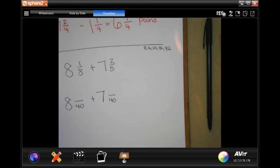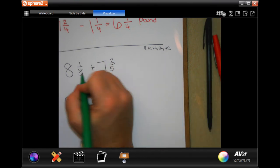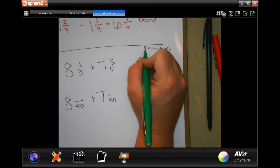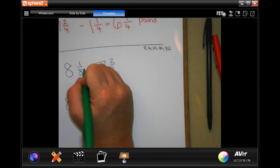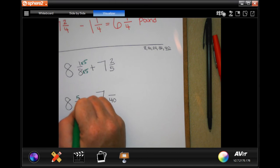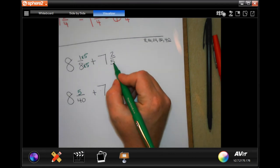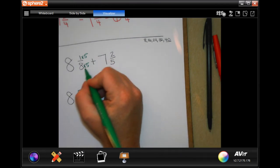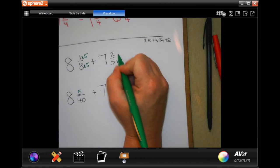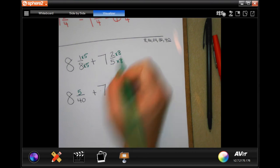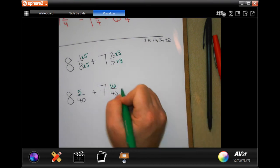Now to get to 40, I had to multiply 8 by 1, 2, 3, 4, 5, times, multiply the top by 5. Get 5. To get from 5 to 40, I had to multiply it by 8 times, 8 times 5. Well, 2 times 8 is 16.